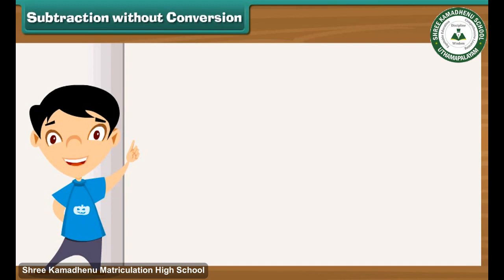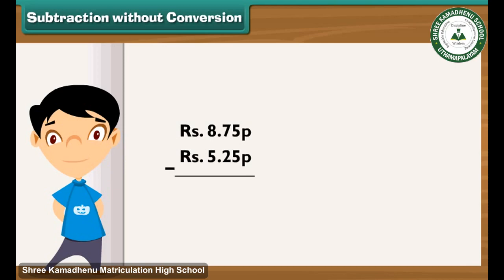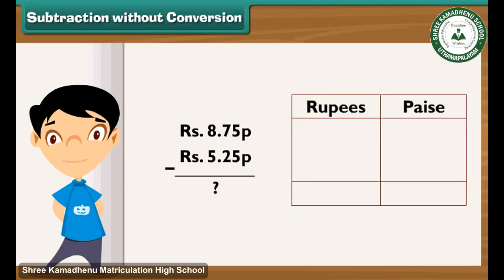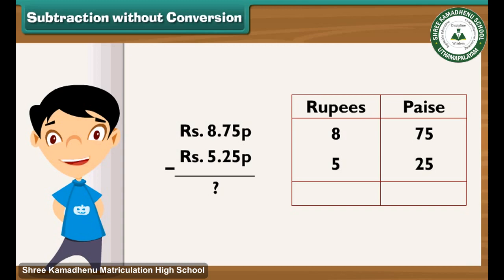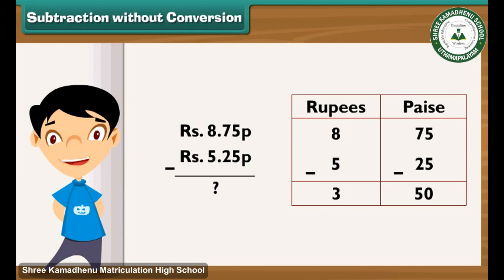Subtraction without conversion: Let's learn how to subtract 5 rupees 25 paise from 8 rupees 75 paise. Write 8 rupees 75 paise as ₹8.75p, then write 5 rupees 25 paise as ₹5.25p below it, so that the rupee part falls in the rupee column and the paise part falls in the paise column. Subtract 25 from 75 to get 50; write 50 in the paise column. Subtract 5 from 8 to get 3; write 3 in the rupee column. So the answer is 3 rupees 50 paise.